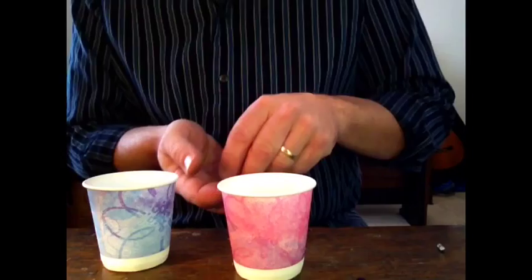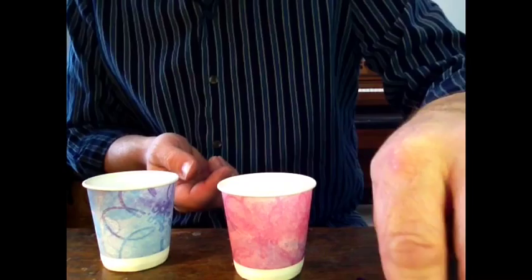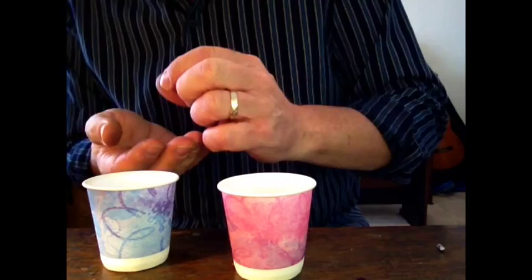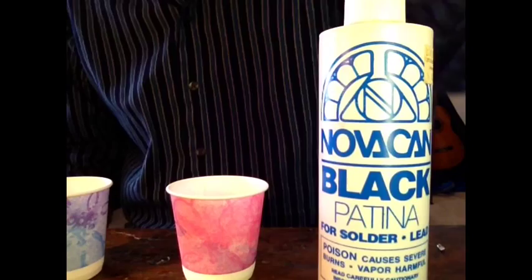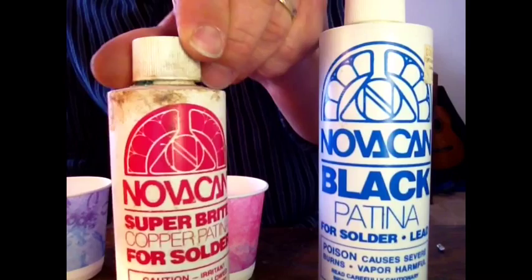To color them so that you have the copper and the black, this is where you need a little more stuff. I'm going to put three in this cup, three in this cup. These will be my copper and black. Then you need to purchase a product like this. This is Novocan Black Patina. Its intended purpose is for people who work leaded glass. And this is the same thing, Novocan Copper Bright Patina. What it does is it reacts with the lead and colors it.